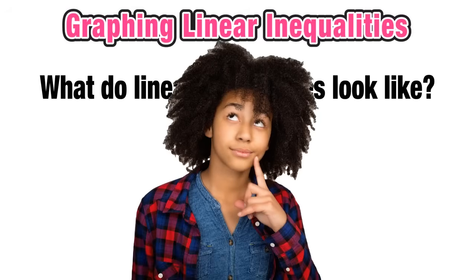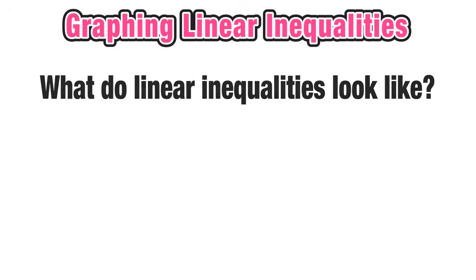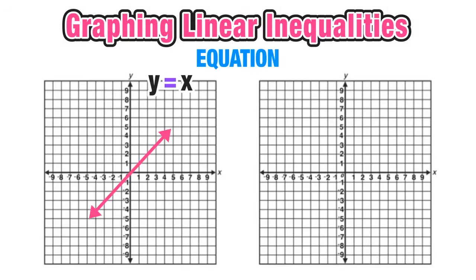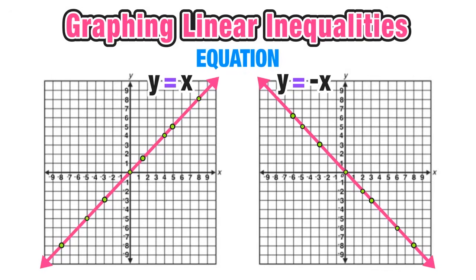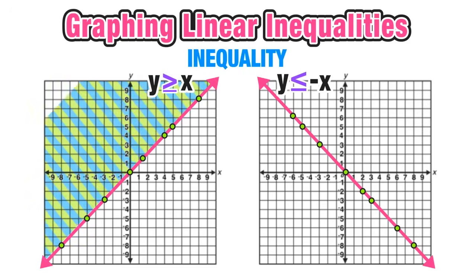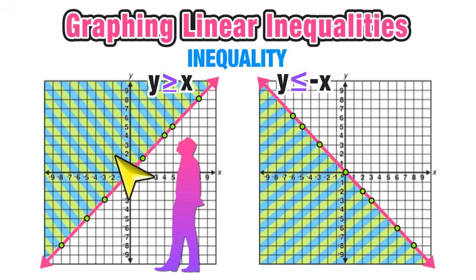Now that we've refreshed our knowledge of equations and inequalities, let's ask: what do inequalities look like on the coordinate plane? With linear equations like y = x or y = -x, any point on the line is a solution. With inequalities, it looks different: for y ≥ x we shade all the area above the line, and for y ≤ -x we shade all the area below the line. Greater than or equal to means shade above; less than or equal to means shade below.